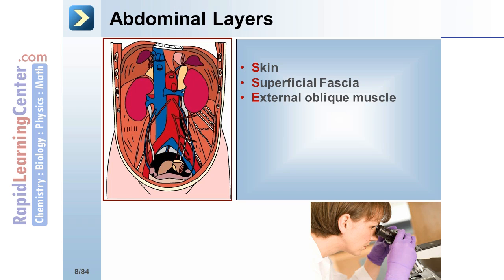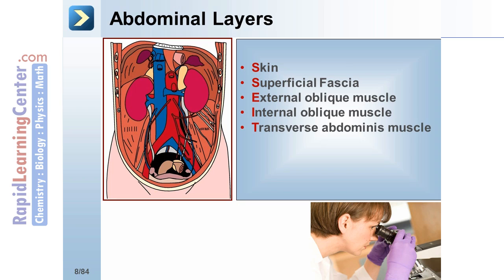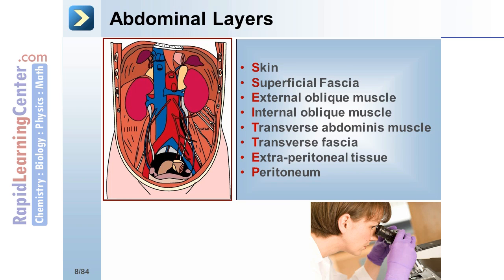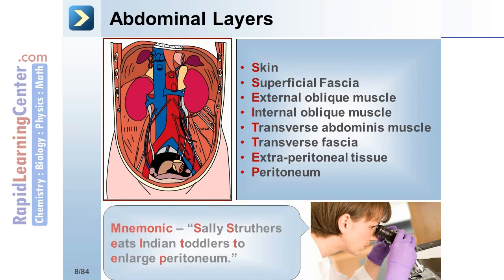external oblique muscle, internal oblique muscle, transverse abdominus muscle, transverse fascia, extraperitoneal tissue, and peritoneum. You can remember this with the mnemonic: Sally Struthers eats Indian toddlers to enlarge peritoneum.